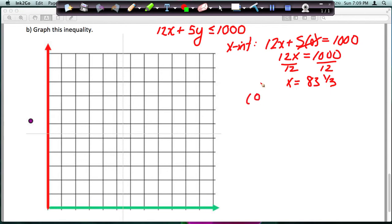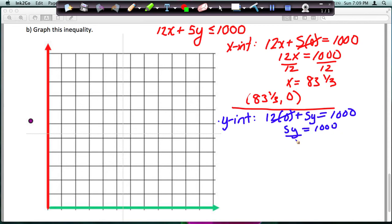So this is X is 83 and a third, and Y is 0. Okay, let's do the same thing now, except instead of finding the X intercept, let's find the Y intercept. And so for the Y intercept, that means we're going to plug in 0 for X and solve for Y. So 12 times 0 is 0, that goes away. We're solving 5Y equals 1,000. Divide both sides by 5 to get Y by itself, and you get Y equals 200. So this is the point X is 0, Y is 200.